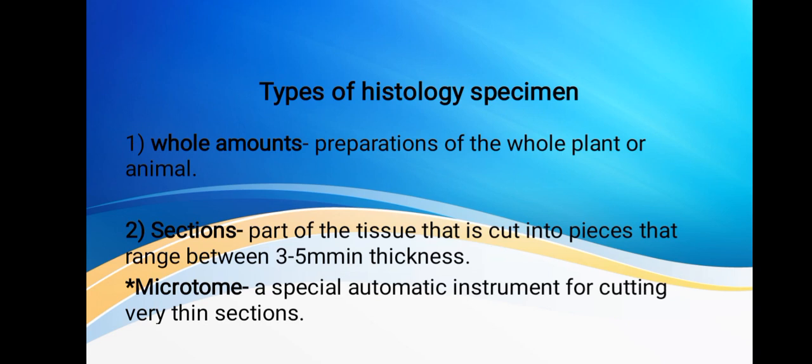The second type is sections, which consist of most histological preparations. They are parts of tissue cut into pieces that range between 3 to 5 millimeters in thickness. They are then processed and cut using a microtome.